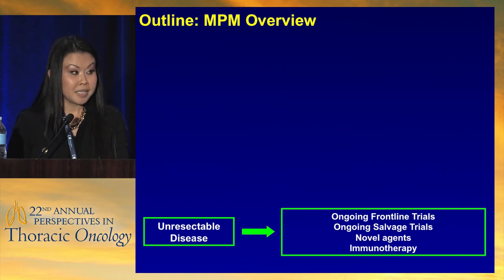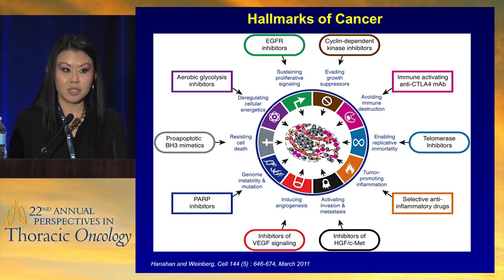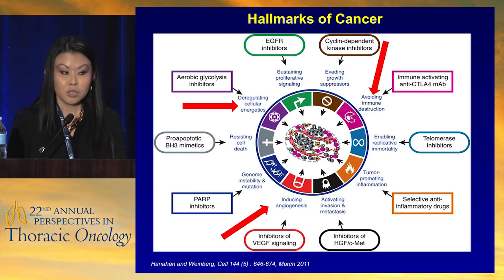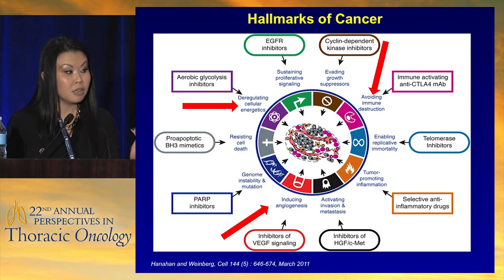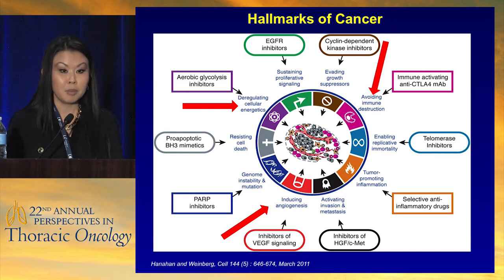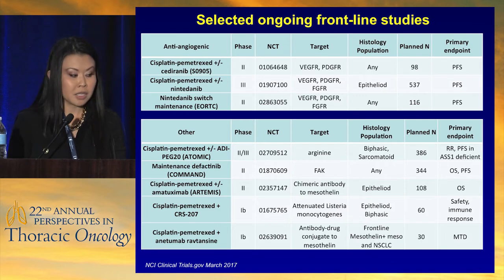In the metastatic setting, there's a lot going on across the hallmarks of cancer and dysregulated pathways. Right now in mesothelioma the focus is heavily on anti-angiogenics, immunotherapies, and cellular metabolism. Looking at emerging frontline trials, there are several important studies to highlight.